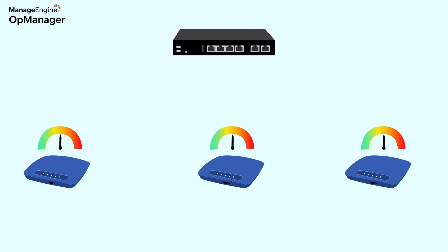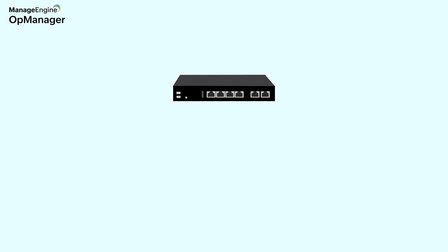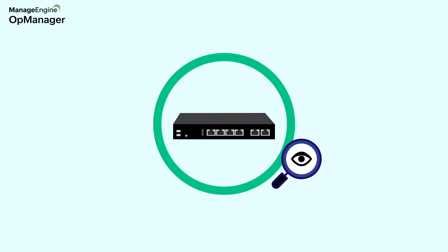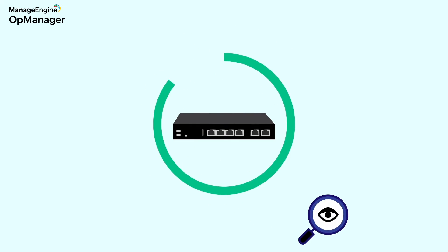Despite all their advantages, WLCs can become a single point of failure in your network. If they go down, they can take your entire wireless network down too. That's why it's a wise idea to monitor your WLCs.